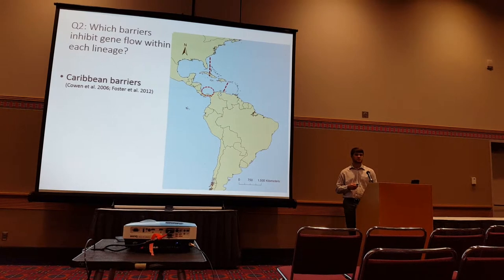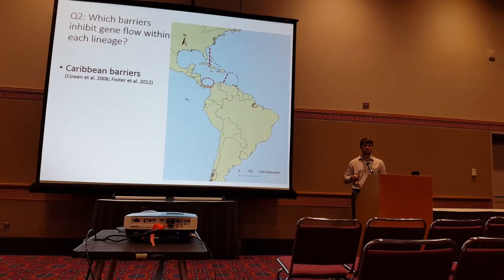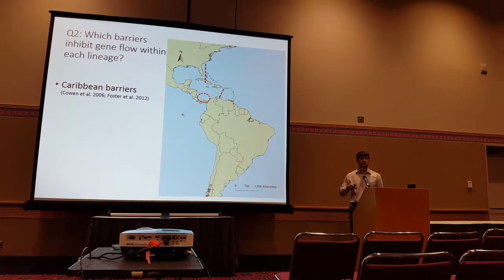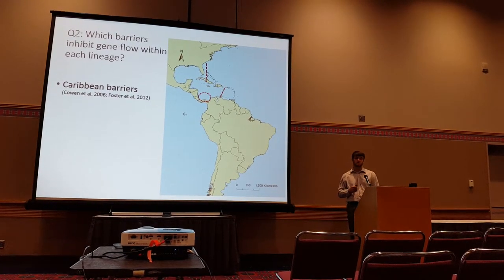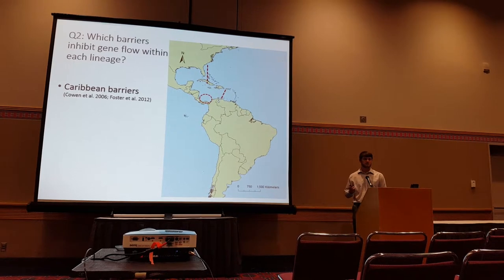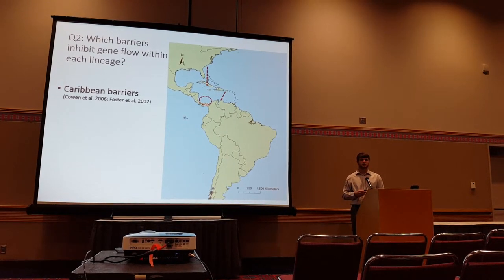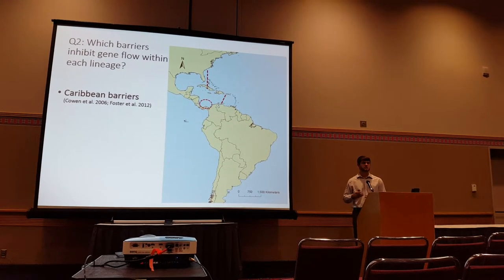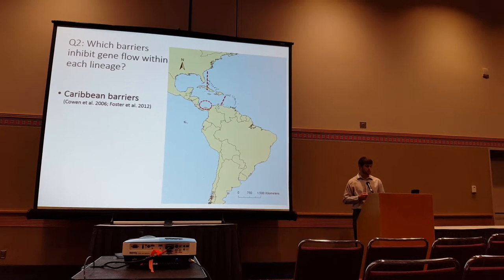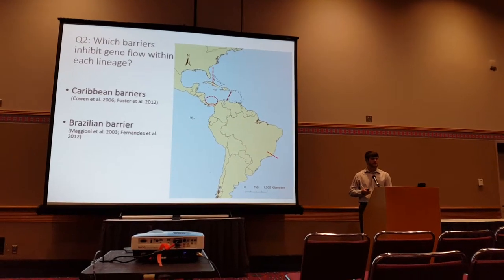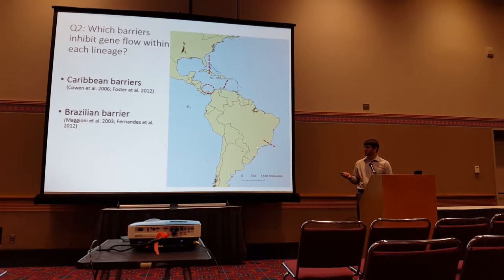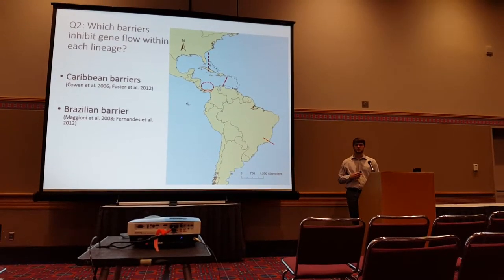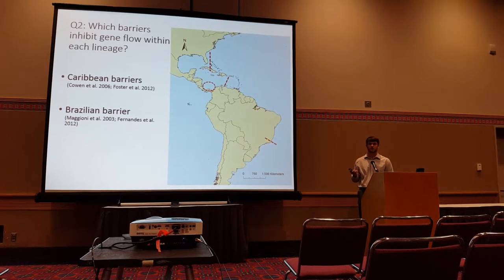For my second question, I was interested in minor barriers within each lineage. Focusing on the Caribbean region, there are several common biogeographic barriers defined largely from ocean currents, although they are also supported by empirical data. They often vary in their effectiveness within each taxon, and also vary in their precise location because ocean currents are known to fluctuate on a pretty large scale. Additionally, in the Cabo Frio region of Brazil, there's a significant ecological nutrient and cold water upwelling system which is known to inhibit gene flow between demersal spawning taxa across this barrier.